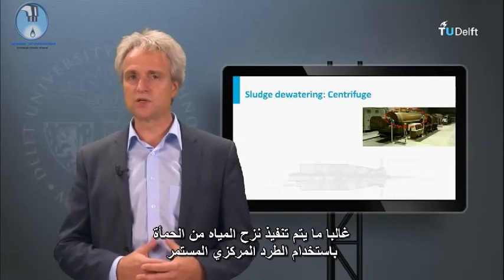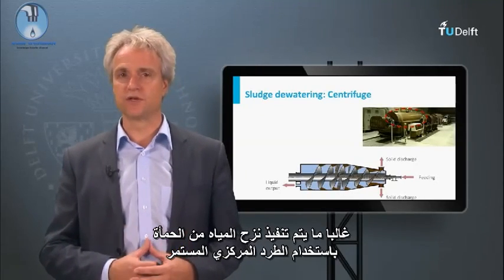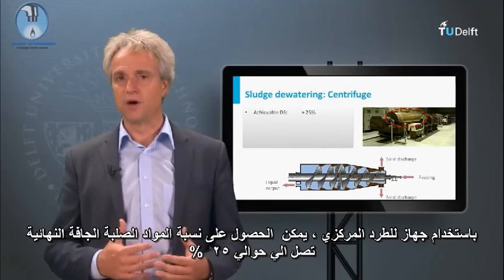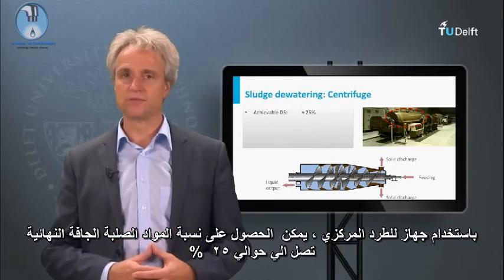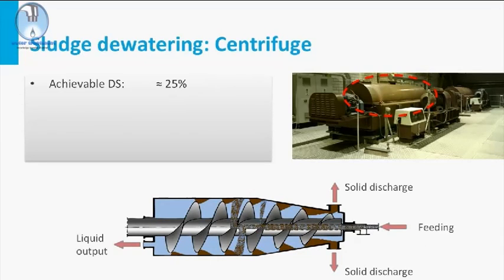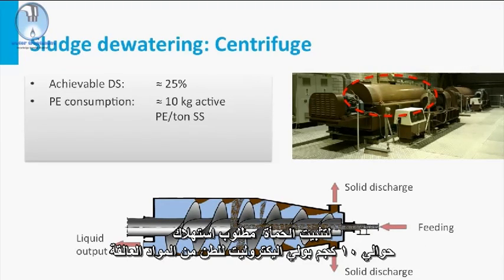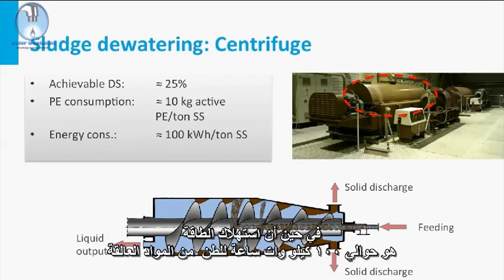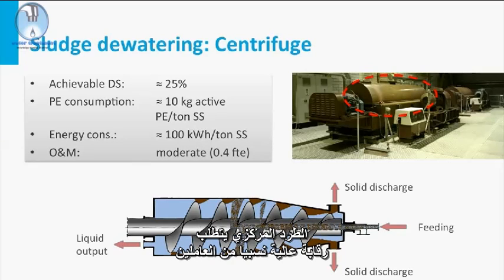Sludge dewatering is often performed applying continuous centrifugation. With a centrifuge, a final dry solids content of about 25% can be achieved. For sludge stabilization, a polyelectrolyte consumption of about 10 kilograms per ton suspended solids is required, whereas the energy consumption is about 100 kilowatt hours per ton SS. Centrifugation requires a relatively high level of personnel attention.